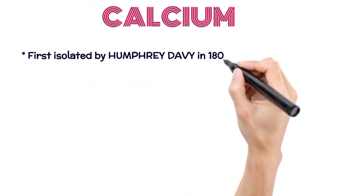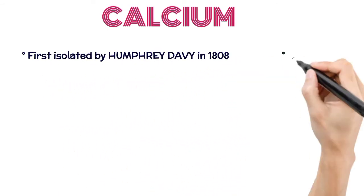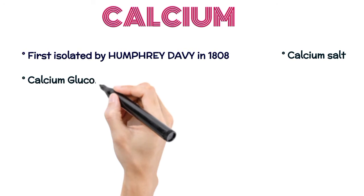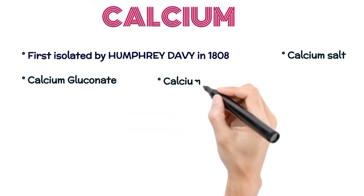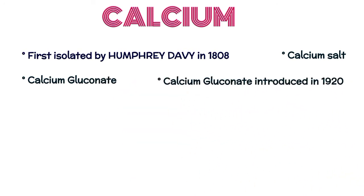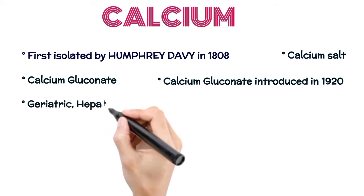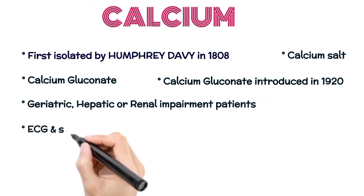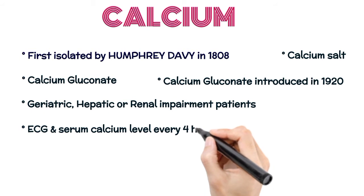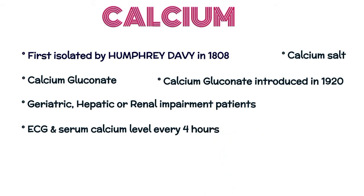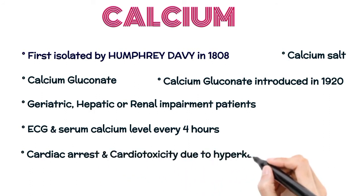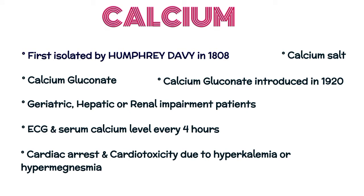Calcium was first isolated by Humphrey Davy in 1808. It is classified as a calcium salt, and most widely used as calcium gluconate, which was introduced in 1920. No dose adjustment is required in geriatric, hepatic, or renal impairment patients. Always monitor ECG and serum calcium level every 4 hours in intravenous calcium therapy patients. Calcium is the prime drug in cardiac arrest and cardiotoxicity due to hyperkalemia or hypermagnesemia.